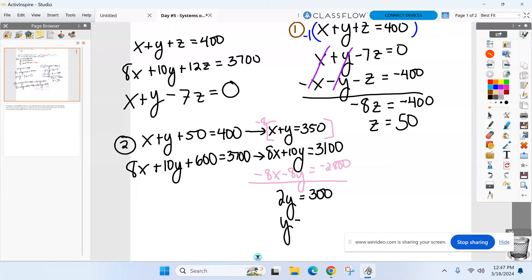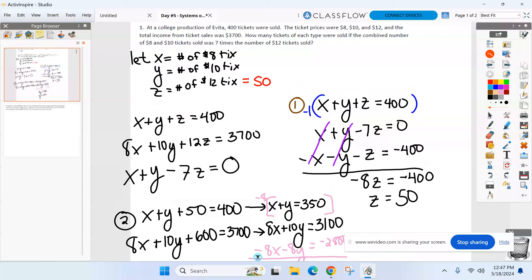2Y equals 300. So $10 tickets, there were 150 of them.